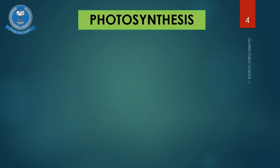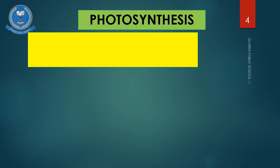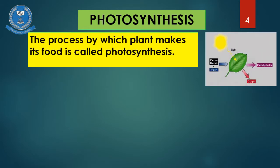Photosynthesis is a scientific word made up from three old Greek words, which means putting things together using light. All living things need food. It provides them with the materials for growth and with the energy for living. All green plants are able to prepare their own food, and the process by which plants make their own food is called photosynthesis.